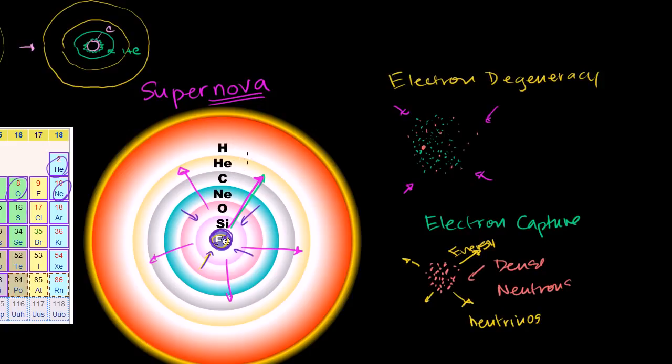But a supernova is when you have a pretty massive star's core collapsing. And that energy is being released to explode the rest of the star out at unbelievable velocities. And just to kind of fathom the amount of energy that's being released in a supernova, it can temporarily outshine an entire galaxy. And in a galaxy, we're talking about hundreds of billions of stars. Or another way to think about it, in that very short period of time, it can release as much energy as the sun will in its entire lifetime.